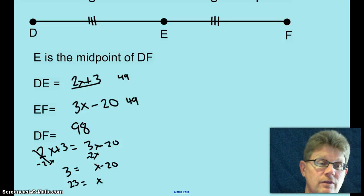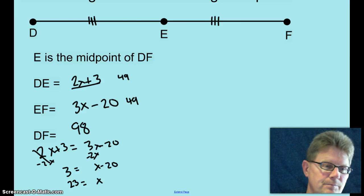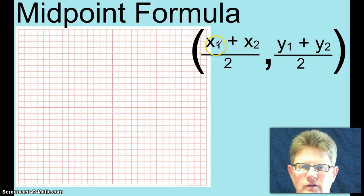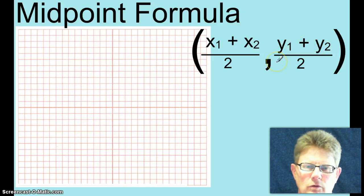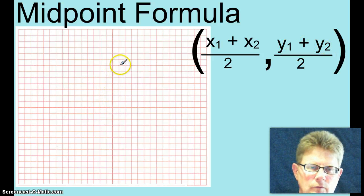All right, let's move on now with coordinates and midpoints. The midpoint formula is X sub 1 plus X sub 2 over 2, Y sub 1 plus Y sub 2 over 2. So let's go ahead and find a couple of endpoints and see if we can find the midpoint.